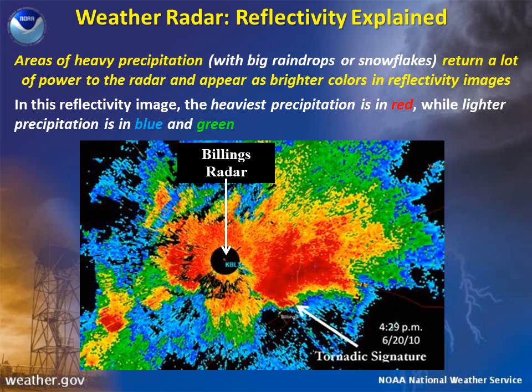But we cannot say with certainty that a storm contains a tornado just because it has a hook shape. We must look at other Doppler weather radar products, and we must try to get confirmation from someone close to the storm to be sure.